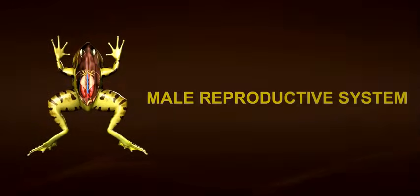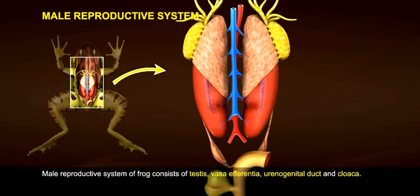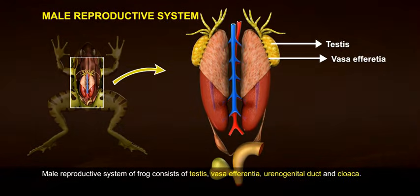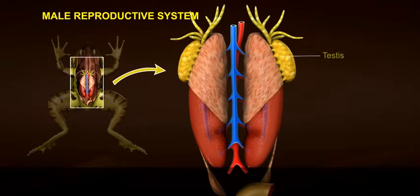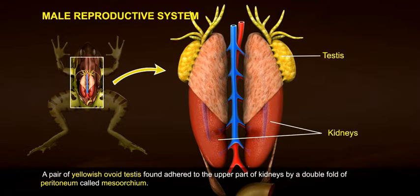Male reproductive system. The male reproductive system of frog consists of testes, vasa efferentia, urinogenital duct, and cloaca. Testes are a pair of yellowish ovoid structures found adhered to the upper part of kidneys by a double fold of peritoneum called mesorchium.